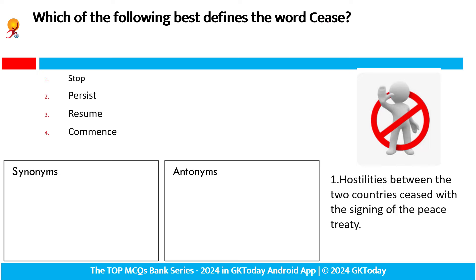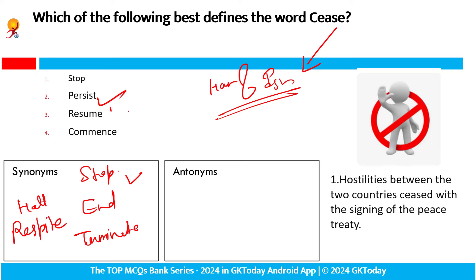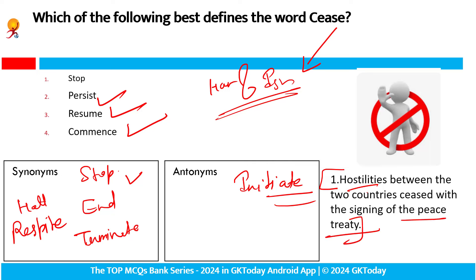Which of the following best defines the word 'cease'? Cease — abhi chal raha hai ceasefire. Kiske beech mein? Hamas aur Israel. So Hamas aur Israel mein chal raha hai ceasefire — lekin start hota hai, then war phir start, then ceasefire. Synonym: cease yani stop hona, end hona, terminate hona. Fault hona. Abhi humne word discuss kiya tha respite — woh bhi iska synonym hai. Antonym: persist karna, resume karna, commence karna, initiate karna. Hostility between the two countries ceased with the signing of the peace treaty. Peace treaty ki saad hostility between the two countries — woh stop hoi.